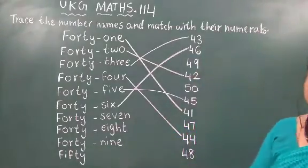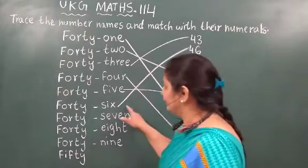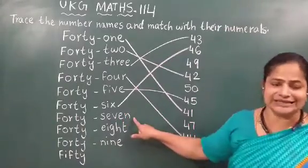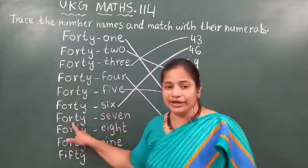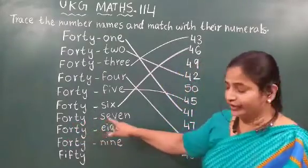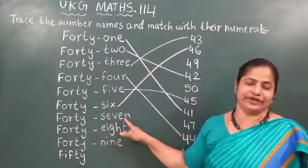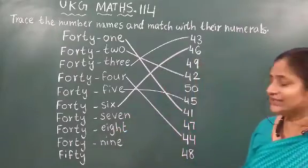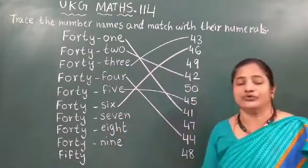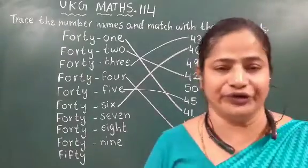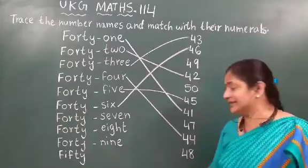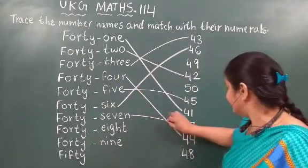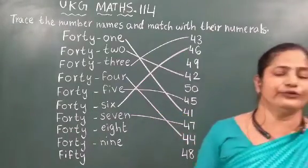Now you got it — how to match with numerals. After 46, which number will come? 47. Now what is the spelling? F-O-R-T-Y S-E-V-E-N, 47. This is the number name of 47. Now you have to find out the numerals of 47. It is already written here. Now you can match 47 — the numerals of 47.